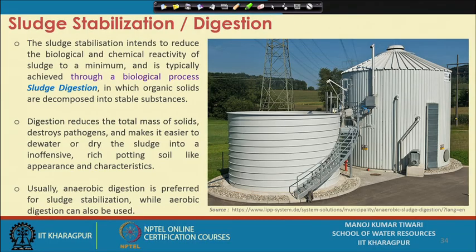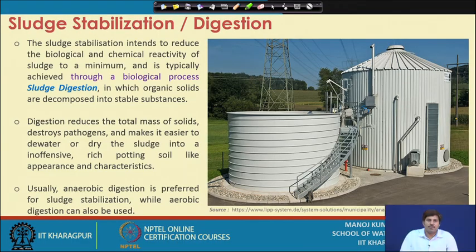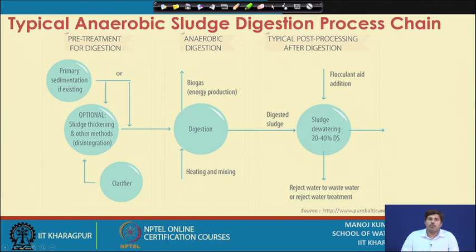Digestion will also make it easier to dewater or dry the sludge into a kind of inoffensive, rich potting soil-like appearance. Usually anaerobic digestion is preferred for sludge stabilization, while aerobic digestion can also be used, but anaerobic digestion is more popular.